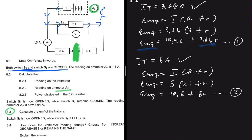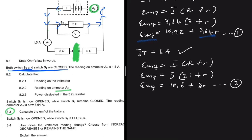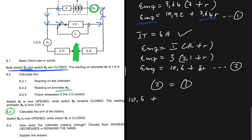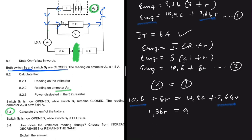We can equate these two equations to determine the internal resistance. Setting Equation 2 equal to Equation 1: 10.5 + 5r = 10.92 + 3.64r. Taking 3.64r to the left and 10.5 to the right: 1.36r = 0.42. Therefore r = 0.42 ÷ 1.36.